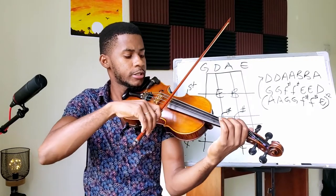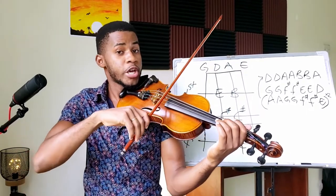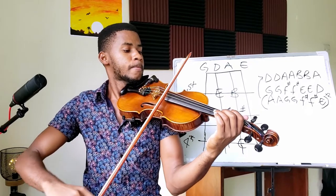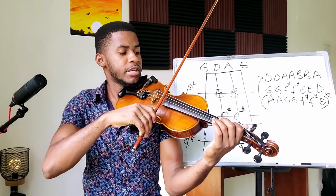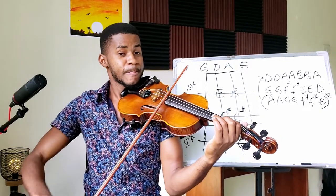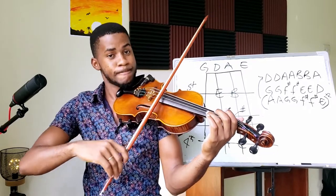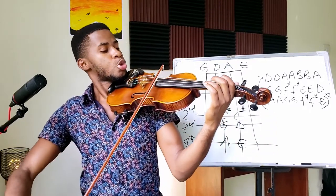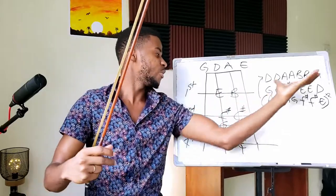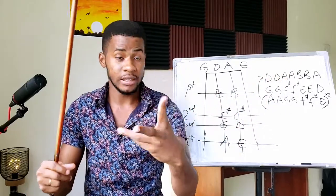Let's try the first line together: we have two D's, two A's, two B's, and then a long A at the end. As you can see, these notes can be used to play simple songs. In fact, these are the notes you're going to be using moving forward, even when you start learning how to read music.